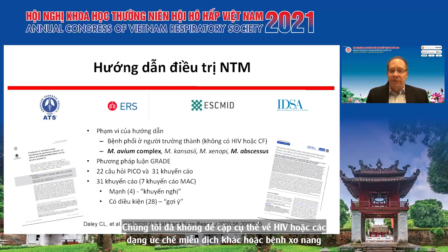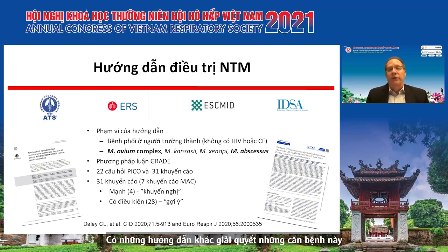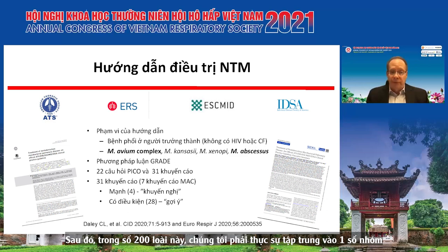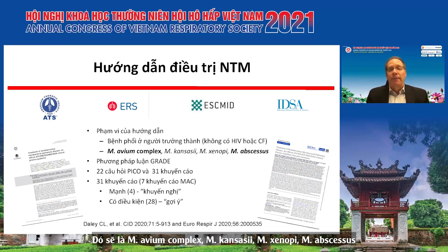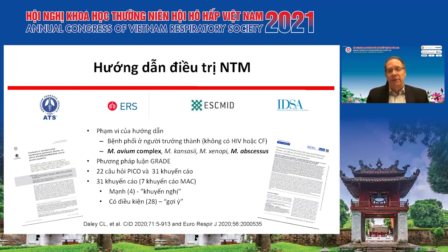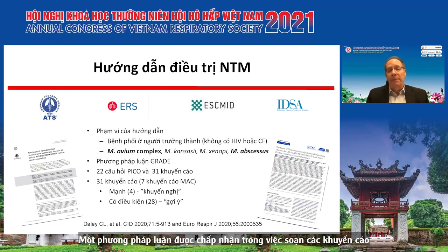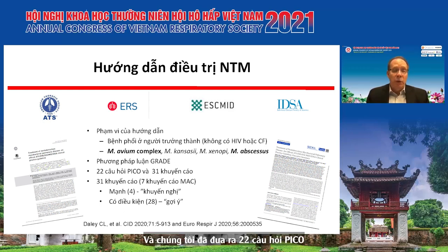We did not specifically address HIV, other forms of immunosuppression, or cystic fibrosis, as there are other guidelines for those illnesses. Of the 200 NTM species, we focused on the four most common species causing lung disease: M. avium complex, M. kansasii, M. xenopi, and Mycobacterium abscessus. We used a commonly accepted methodology for guideline development and came up with 22 PICO questions and 31 recommendations.